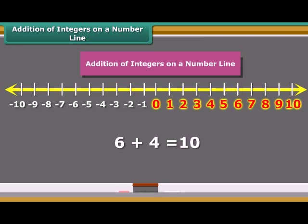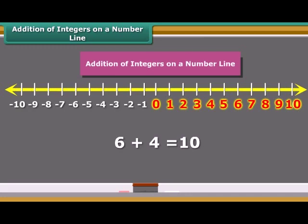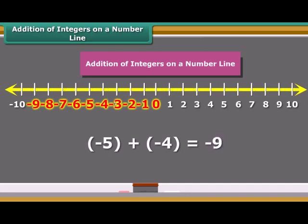Let us add two negative numbers, minus five and minus four on the number line. In this case, first we move five steps to the left of zero reaching minus five, and then we move four steps to the left of minus five and reach minus nine. So we see, when we add two positive integers, their sum is a positive integer. When we add two negative integers, their sum is a negative integer.